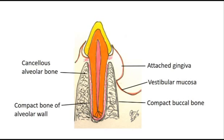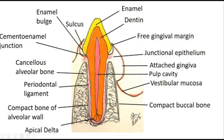On the outside of the cancellous bone is compact bone that lines the outside of the jaw bone and surrounds the root of the tooth. The vestibular mucosa is the tissue that fans out from the attached gingiva and lines the lips and cheeks. It's very mobile and carries blood vessels, nerves, and also muscles. Here is everything together.